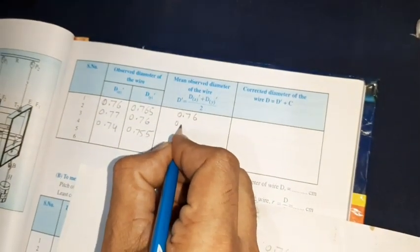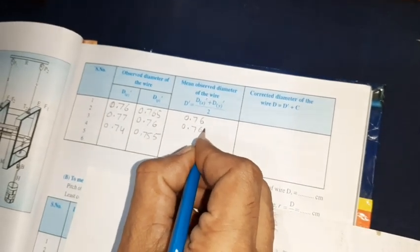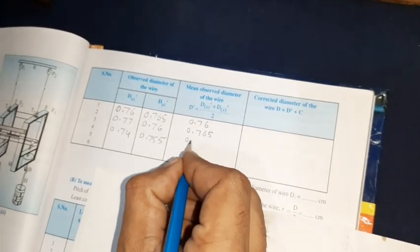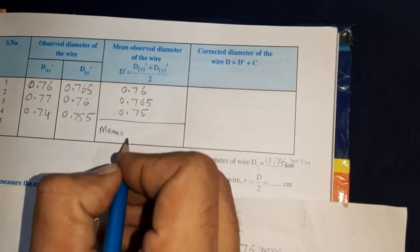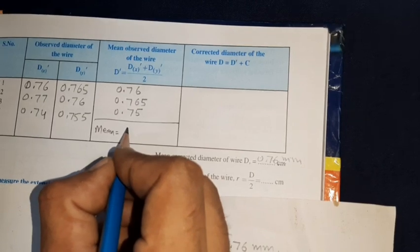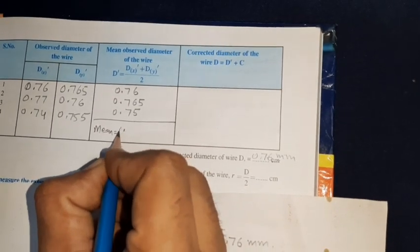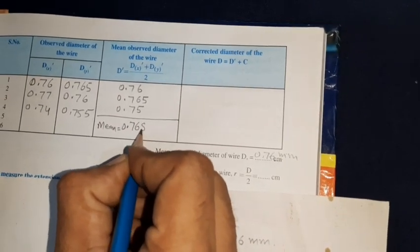This will be 0.76, again 0.765, and this will be 0.75. So now the mean will be 0.768 millimeters.